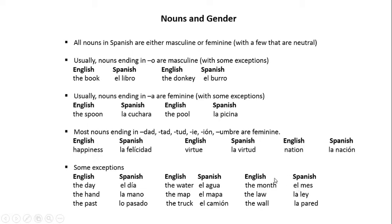Let's move on to nouns and gender. All nouns in Spanish are either masculine or feminine, with a few that are neutral. Usually, nouns ending in 'o' are masculine, with some exceptions — for example, 'el libro', the book, and 'el burro', the donkey. Usually, nouns ending in 'a' are feminine, with some exceptions — for example, 'la cuchara', the spoon, and 'la piscina', the pool.